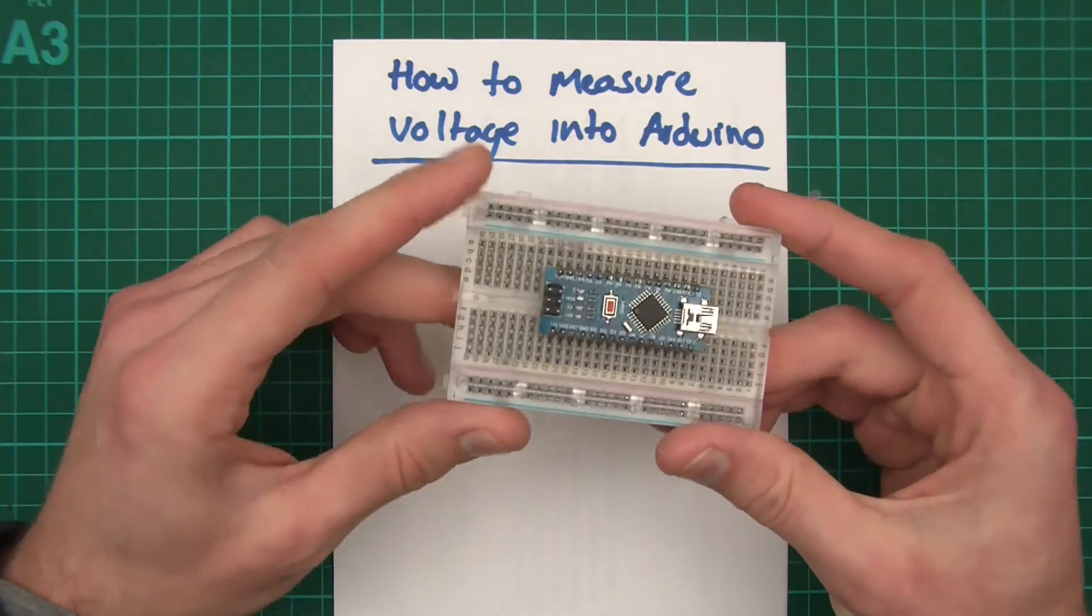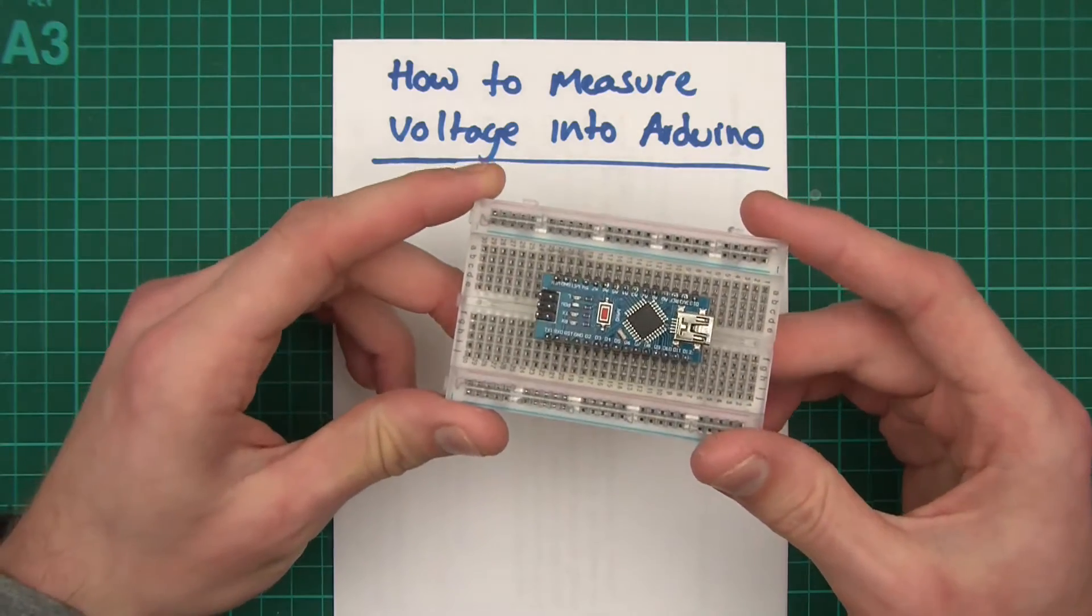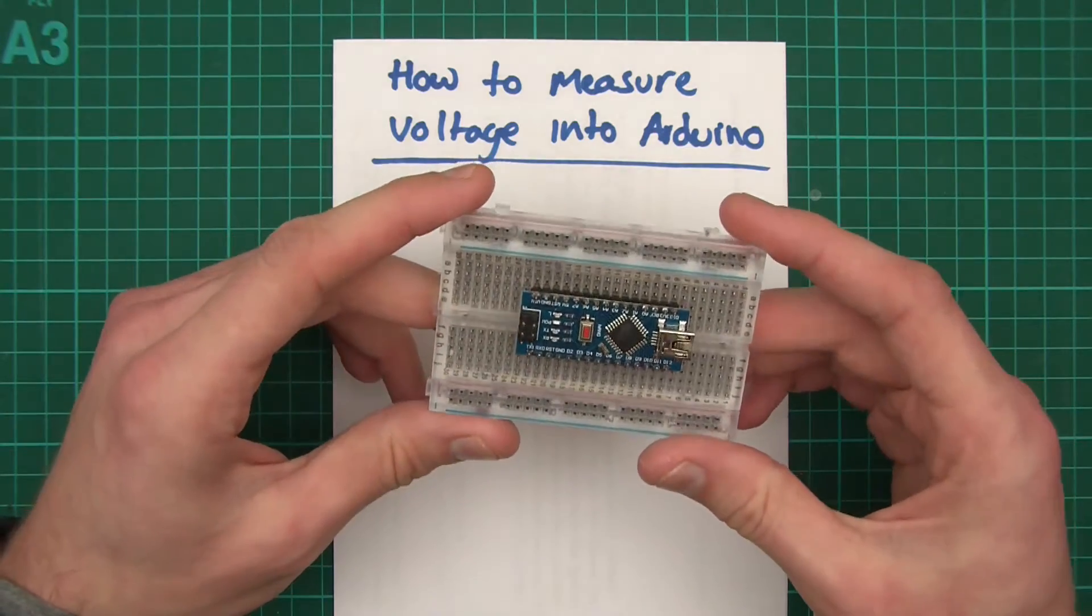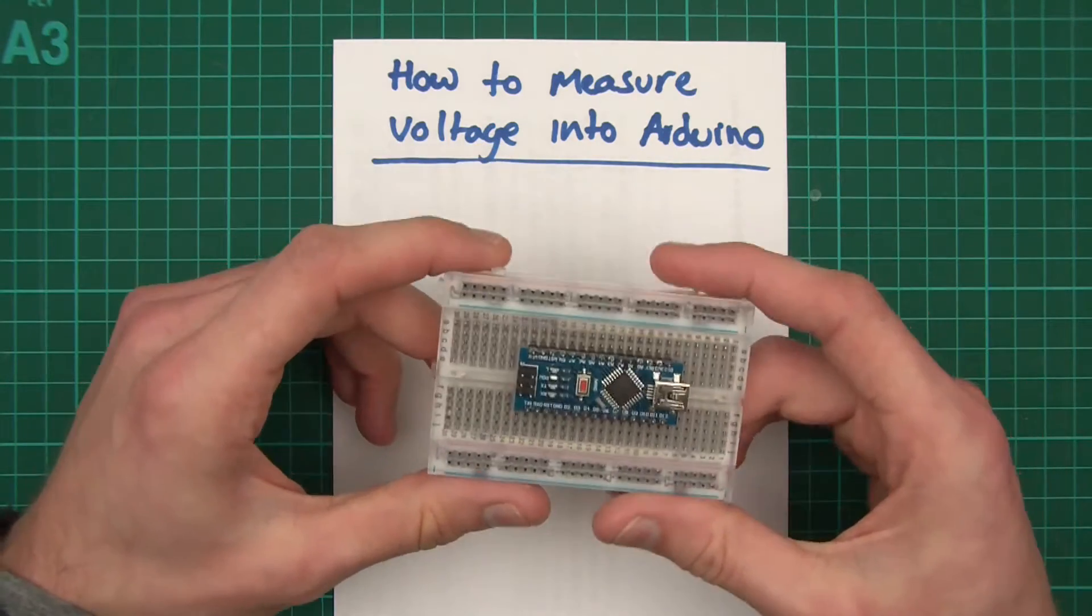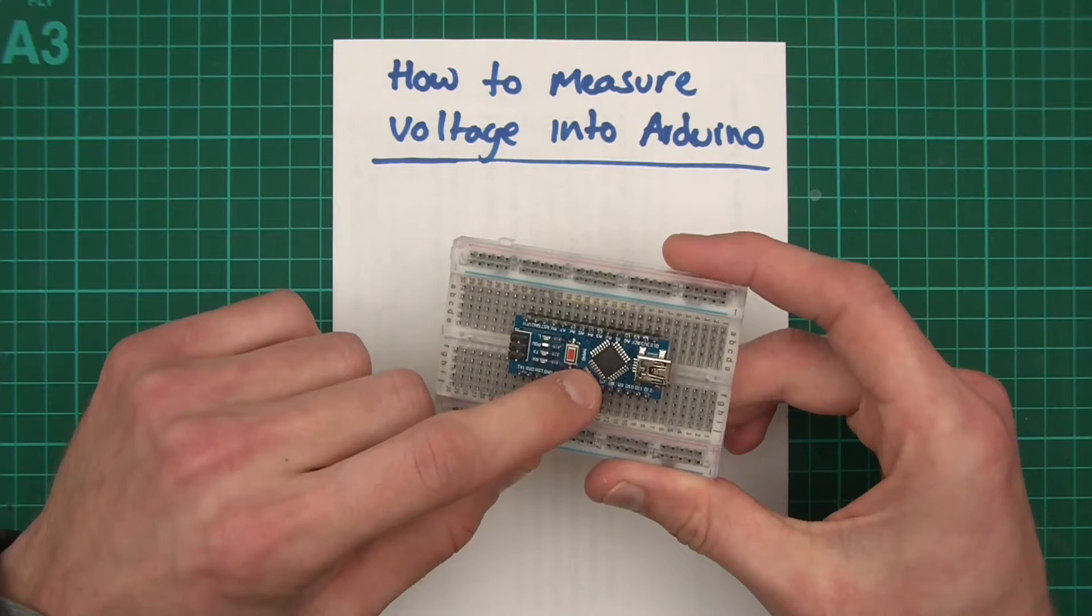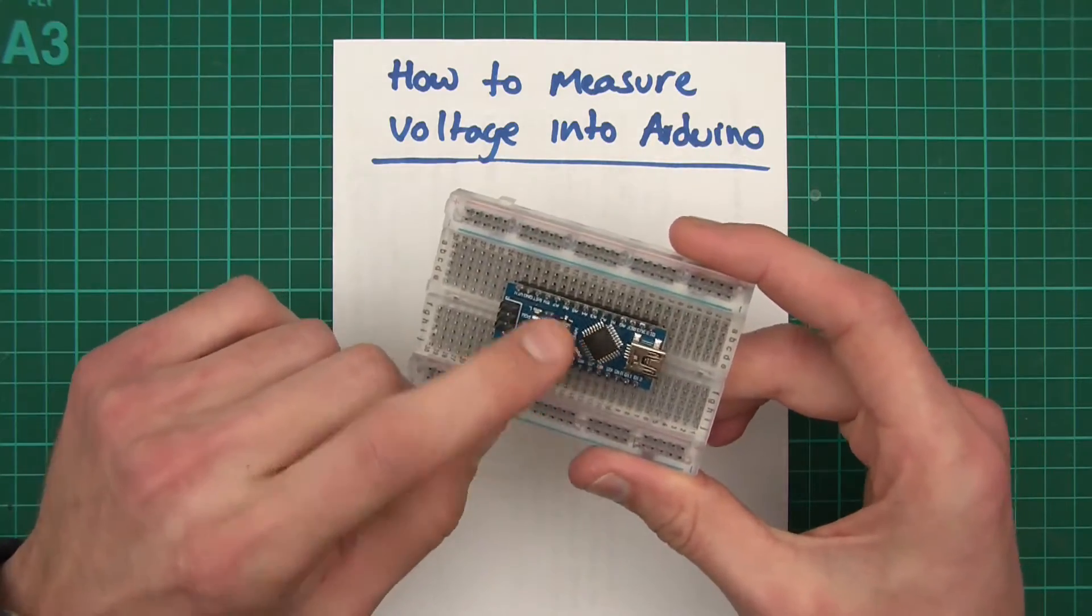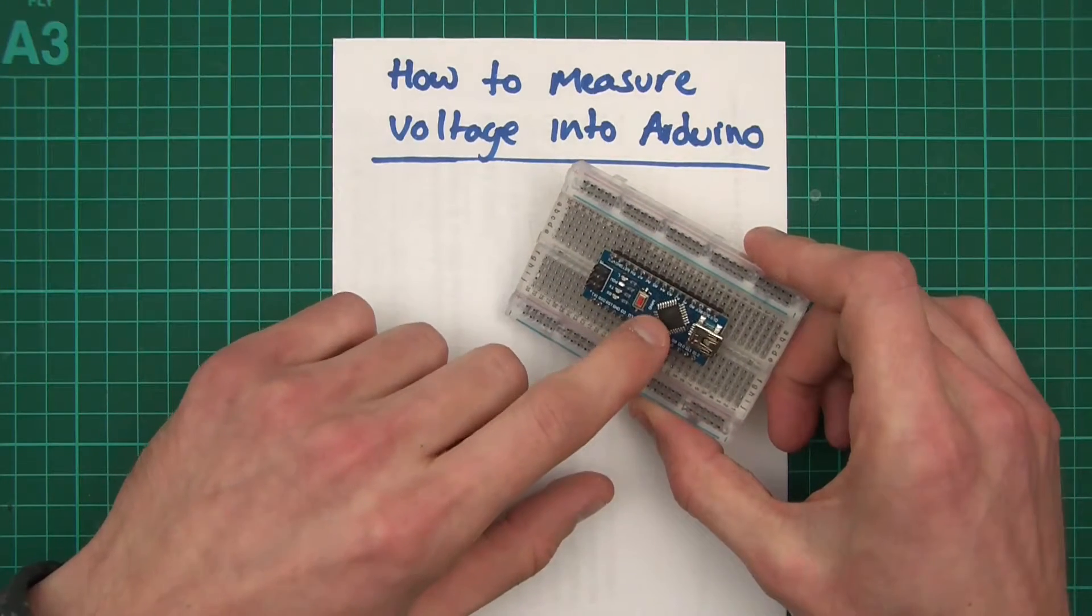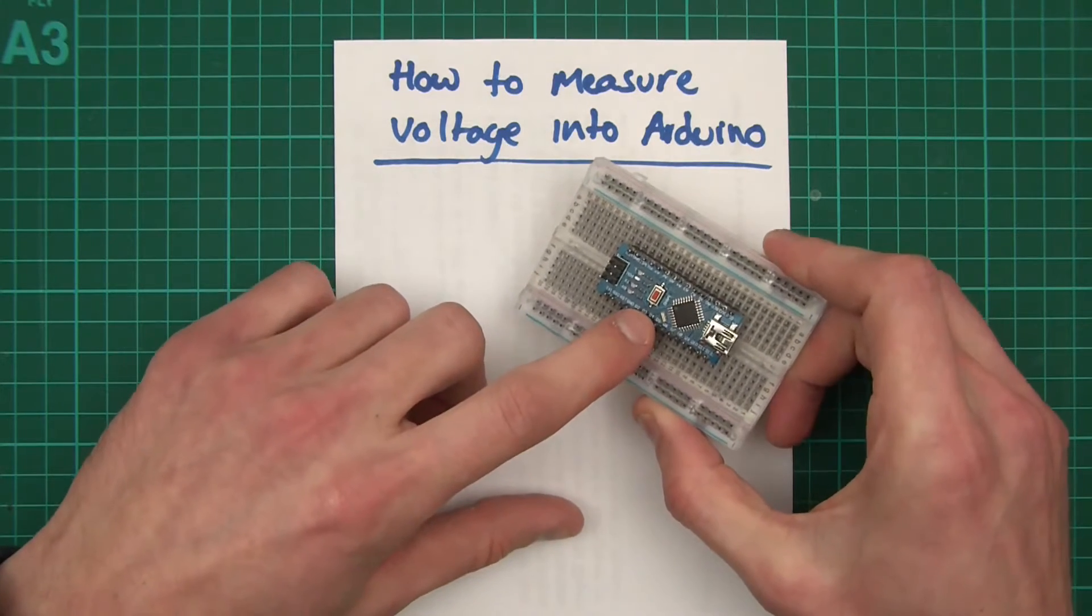With the Arduino, it has a 5V ADC, or this one in particular does anyway. You can actually get 3V or 3.3V ADCs too. Generally speaking, I work with the 5V ones. So why am I talking about ADCs? An ADC is an analogue to digital converter and basically it gets an analogue voltage and reads it into the chip. And it converts it into digital, of course, because these chips are digital only. They don't understand analogue. So we get an analogue voltage and we're going to try and read it into a digital device.